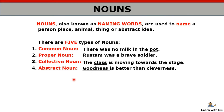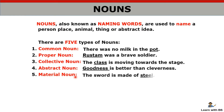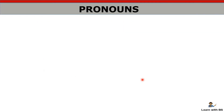Then we have abstract noun — nouns which cannot be touched or seen with eyes. Any quality like patience or goodness — these are called abstract nouns. Then material noun — as the name suggests, the name of any material: steel, silver, gold — so it is a material noun. So we have five types of nouns.